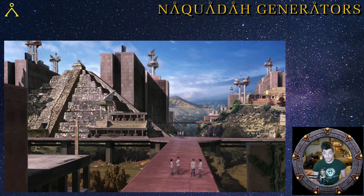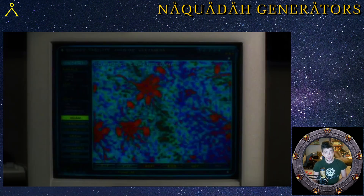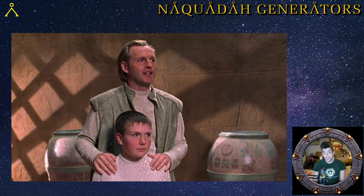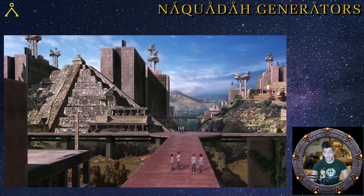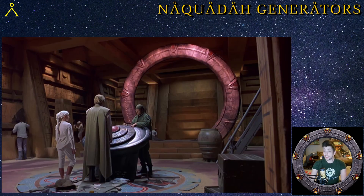In the equivalent of 1950 Earth year, the Orbanians developed nanite technology and began using nanites to increase the learning efficiency in children. Once a child had learned all they could, at age 12 the nanites would be taken out and shared with the larger population, allowing for mass knowledge sharing. This paved the way for accelerated technological advancements, and the Orbanians quickly surpassed the Tauri, being a few decades more advanced by 1999.